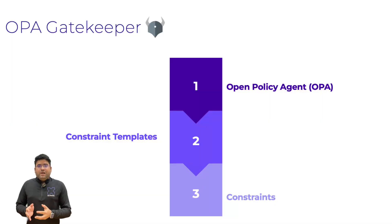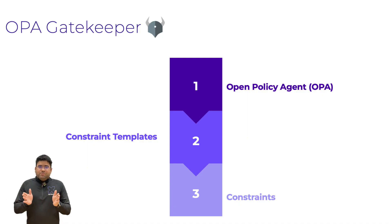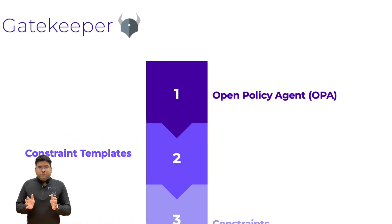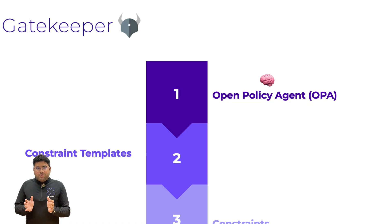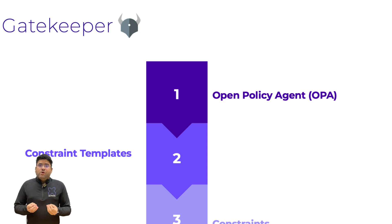First, let's understand what makes Gatekeeper tick. Think of Gatekeeper as the cluster's security gatekeeper — hence the name. It's built on three core components. First, we have Open Policy Agent, OPA. This is the brain that evaluates policies using a language called Rego.